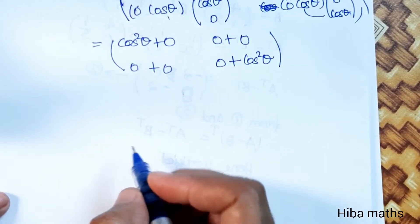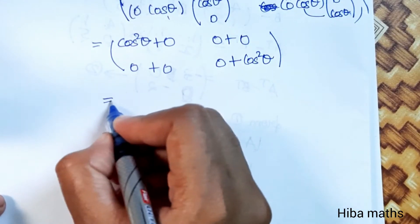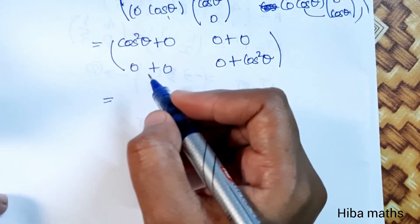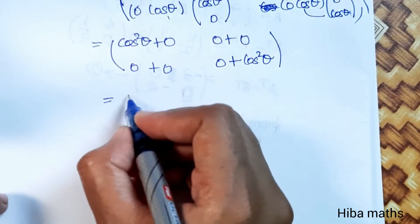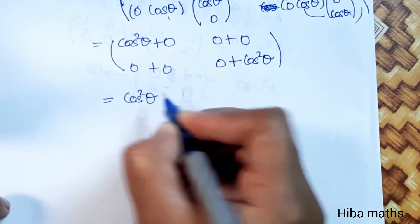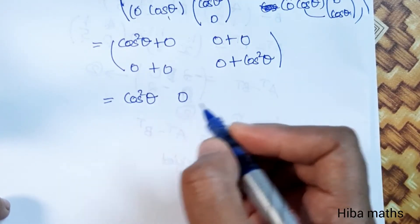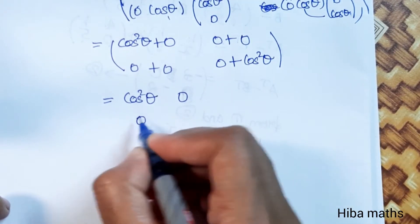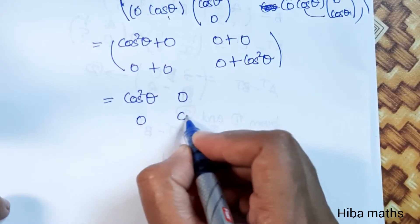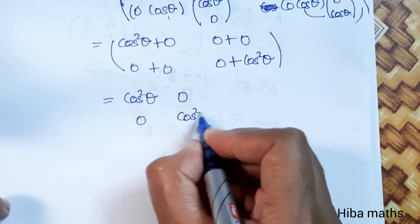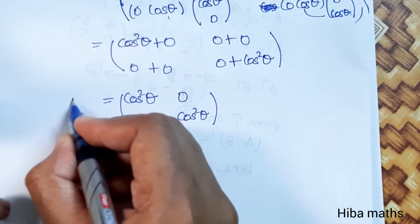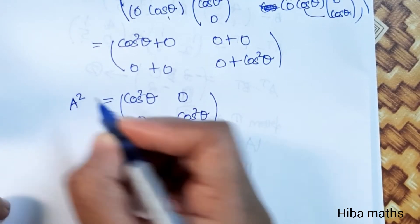Now simplifying this matrix: 0 plus cos squared theta gives cos squared theta for position (1,1); 0 for position (1,2); 0 for position (2,1); and 0 plus cos squared theta gives cos squared theta for position (2,2). So A squared equals [cos squared theta, 0; 0, cos squared theta].